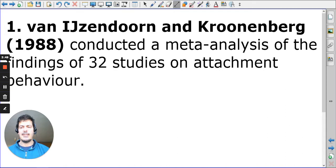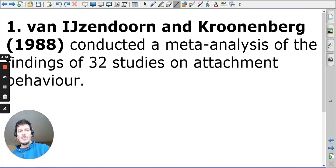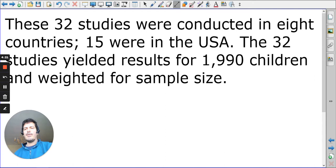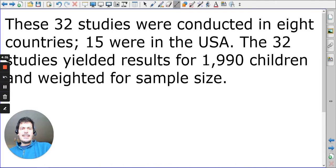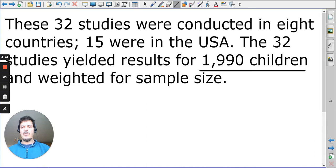Van IJzendoorn is potentially the person they've asked us to have a look at, and I'm going to add his research where he worked with Kroonenberg. He does a meta-analysis, analyzing the published work of 32 studies on attachment. From this meta-analysis, there were eight different countries, and 15 of the studies were done in the US. Overall, there's quite a significant number of children included across these 32 studies.